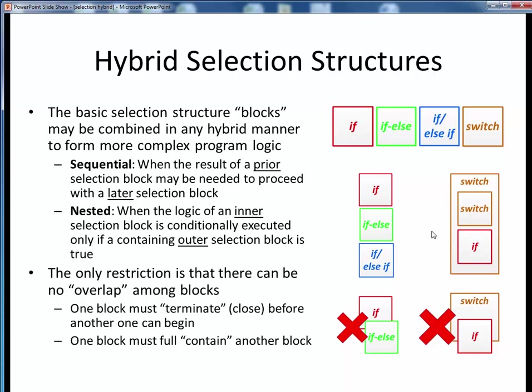The other form shown here represents nested selection, in which the logic of some inner selection block is conditionally executed only if some containing outer selection block is true. So, for example, these inner switch and if blocks might represent individual cases of the outer switch block. As both of these diagrams might suggest, we can mix and match the various types of selection, sequentially or nested or both, however we wish.